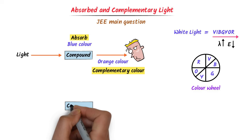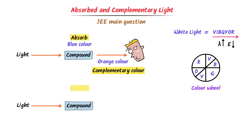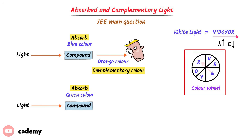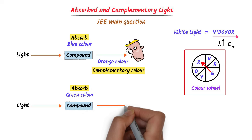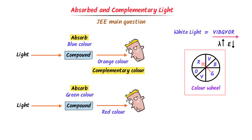Consider another example. Let a coordination compound absorb green color. The color wheel shows that opposite to green is red. Our eyes will see this coordination compound as red. Thus, the complementary color is red.